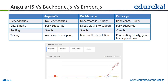Normally in AngularJS we mention ngController equal to some controller name everywhere. But if you want to migrate to AngularJS 2, you should do it the proper way — instead of just mentioning your controller name, mention it as ngController equal to 'myController as someAlias'. This will make migration to AngularJS 2 from 1.3 or 1.4 much easier.